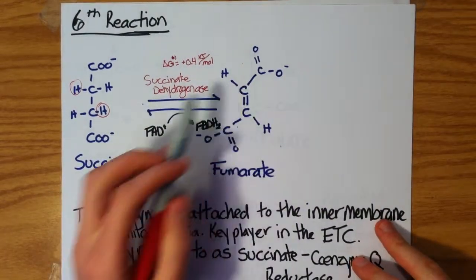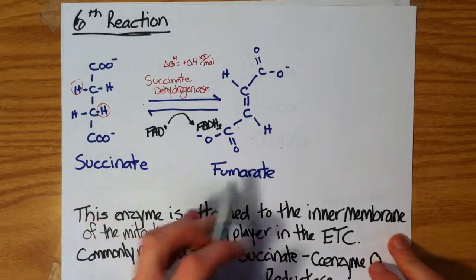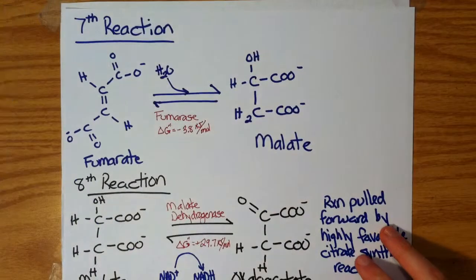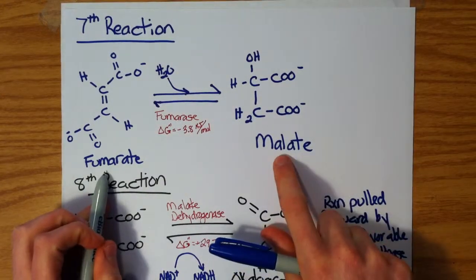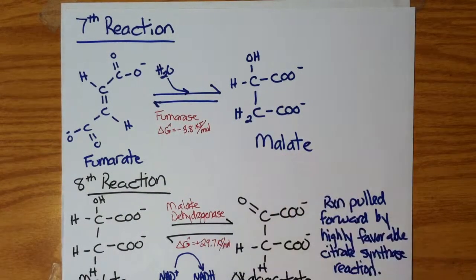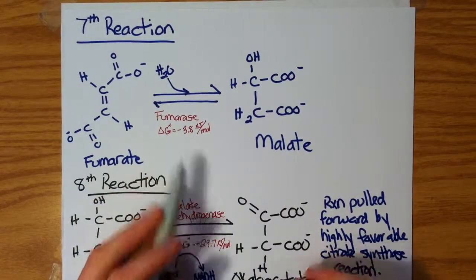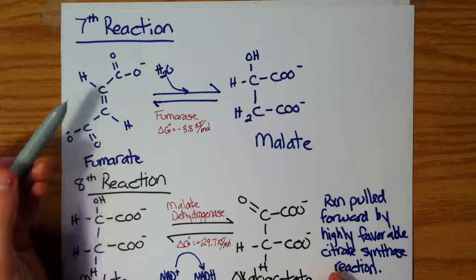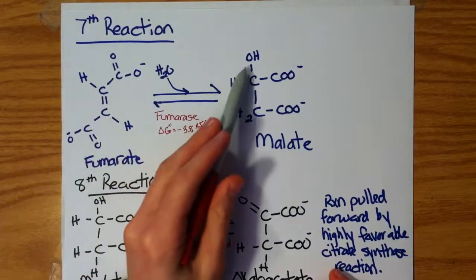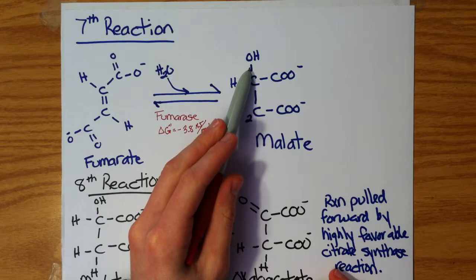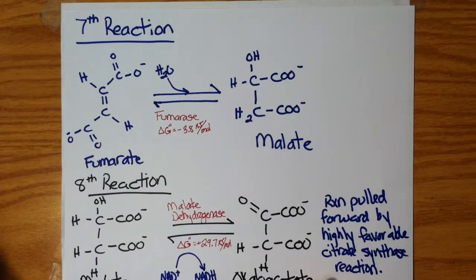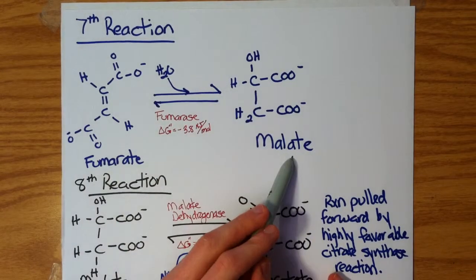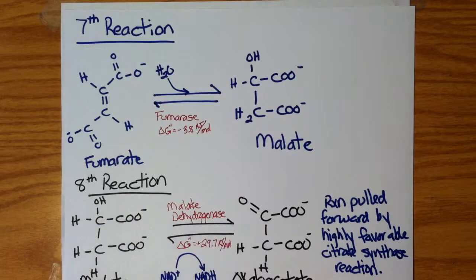We still have our 4-carbon compound, slowly working our way back to oxaloacetate. The next reaction is fumarate into malate. The ΔG°' value is close to zero. This is also commonly known as a hydratase because we are hydrating this double bond, adding a hydroxyl group. We now have a 4-carbon compound with a hydroxyl group — we form malate.